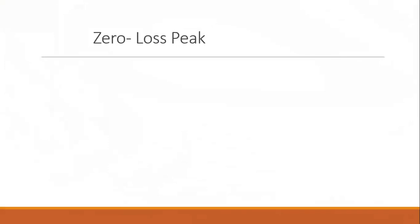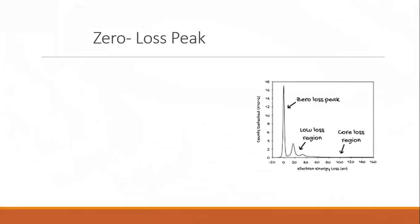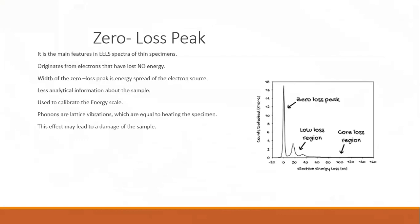Zero loss peak is the main feature in an ELS spectrum of thin specimens. It originates from electrons that have lost no energy. Width of the zero loss peak is the energy spread of the electron source. Less analytical information about the sample. Used to calibrate the energy scale.